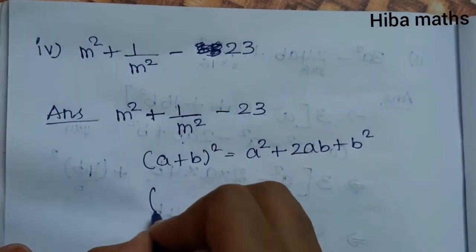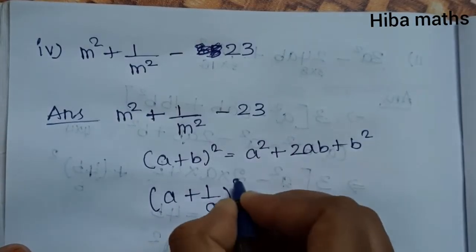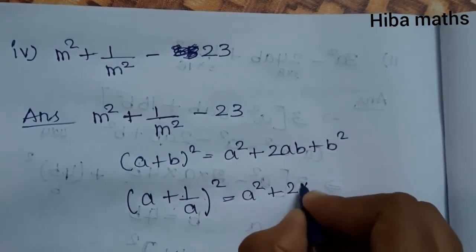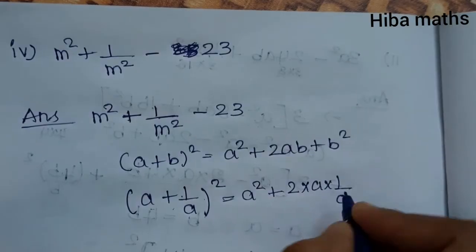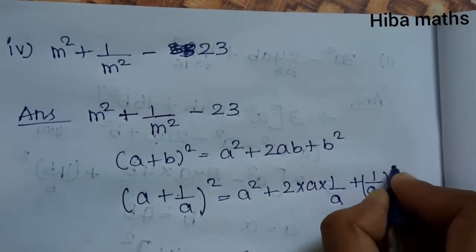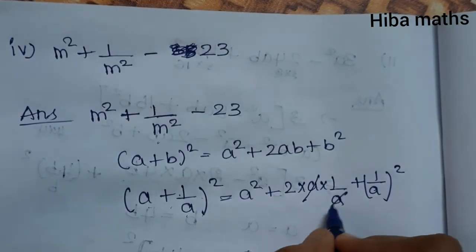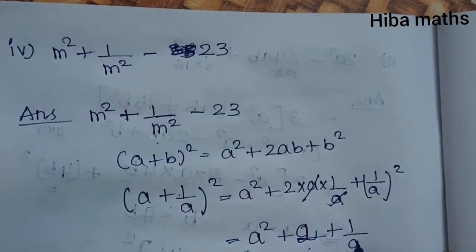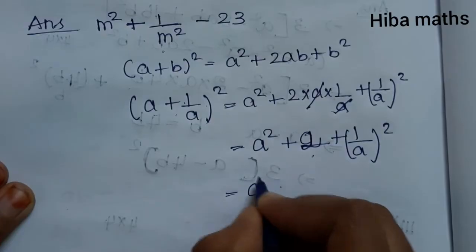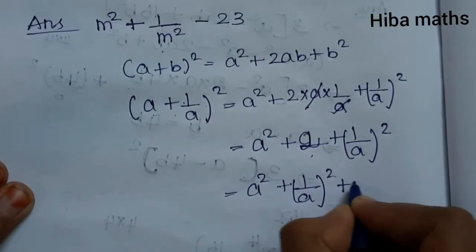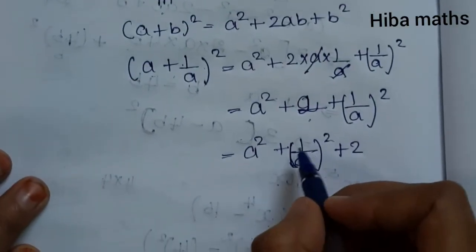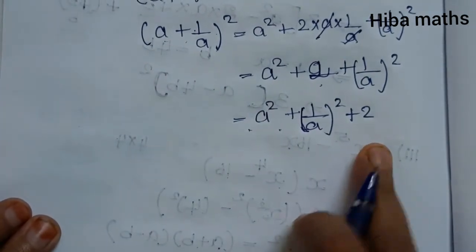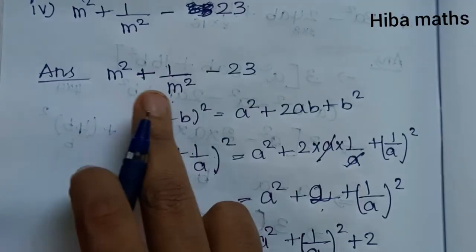So a² + 1/a² = (a + 1/a)² - 2. In our sum, m² + 1/m² - 23 becomes (m + 1/m)² - 2 - 23 = (m + 1/m)² - 25. We add and subtract 2 to create the perfect square identity.